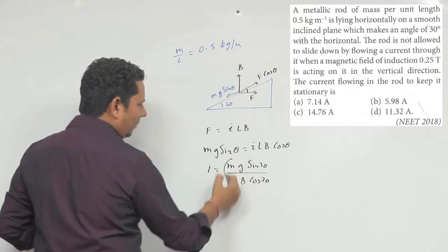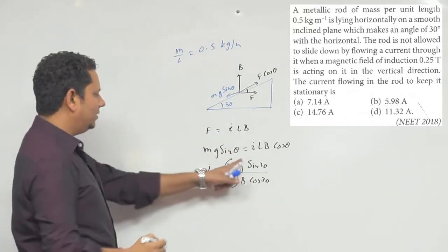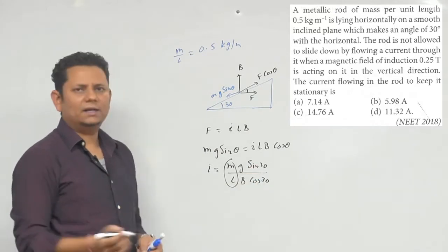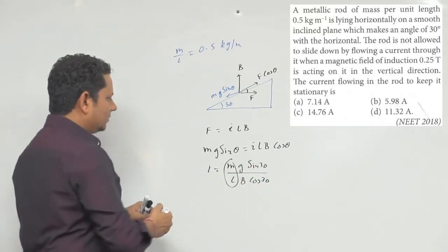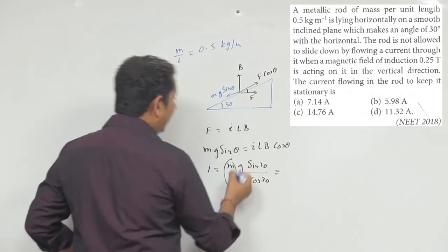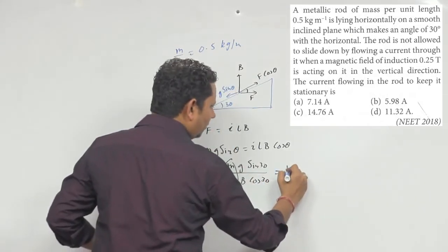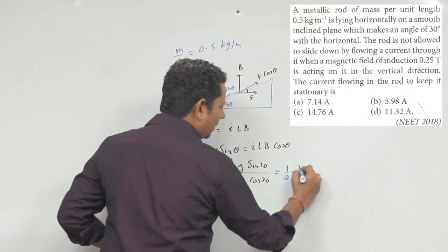So M by L ratio is already given, G is given, B is given. Current i will be equal to M by L multiplied by g, which is 10.